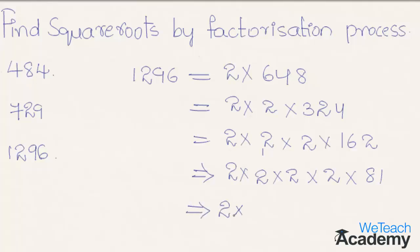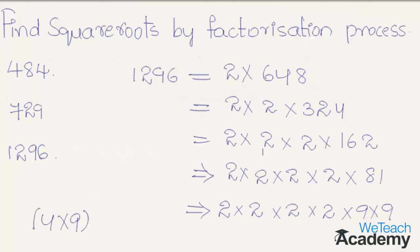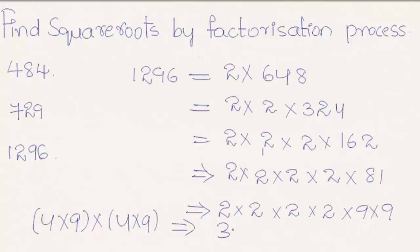2 multiplies itself 4 times and 81 is nothing but 9 × 9. Now let us group the factors and make them equal pairs. We can write this as 4 × 9 into 4 × 9, that is 36 × 36, which gives us 36 squared. So the square root of 1296 is equal to 36.